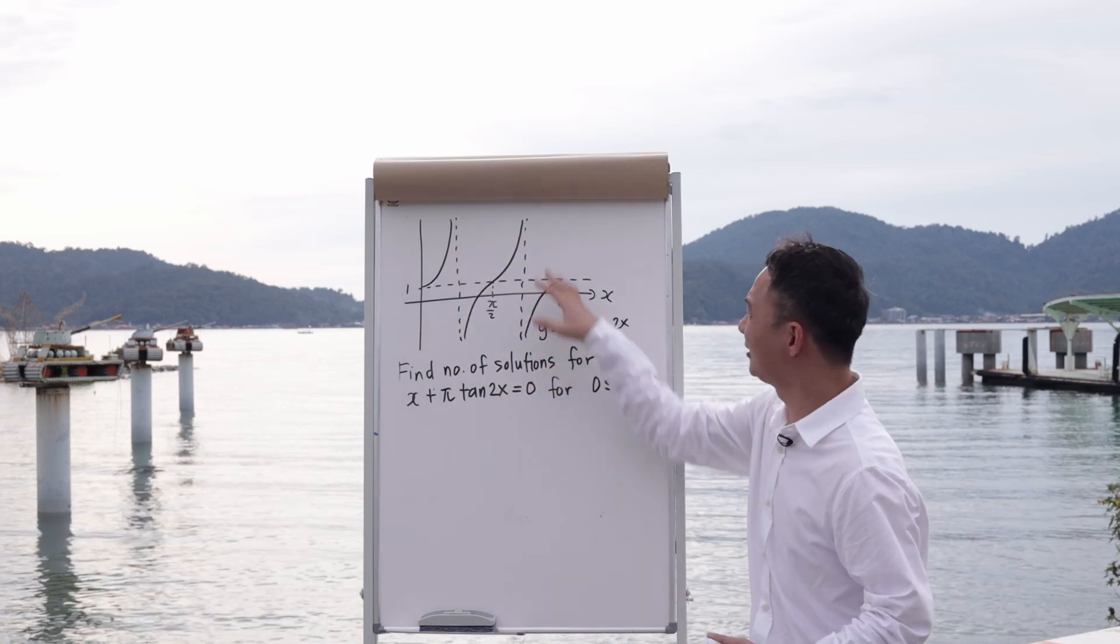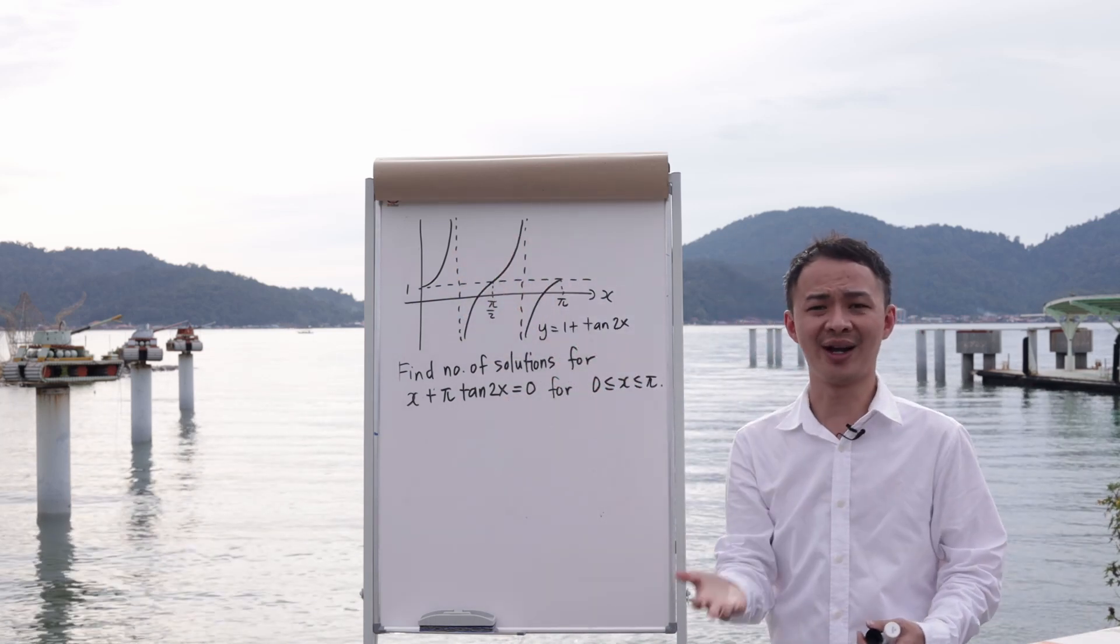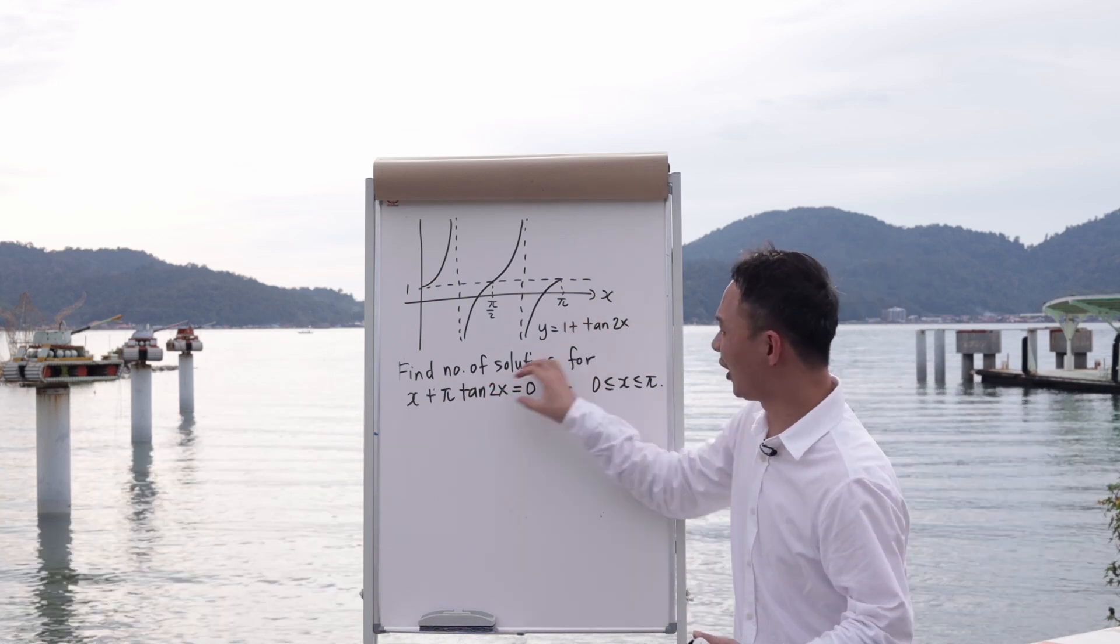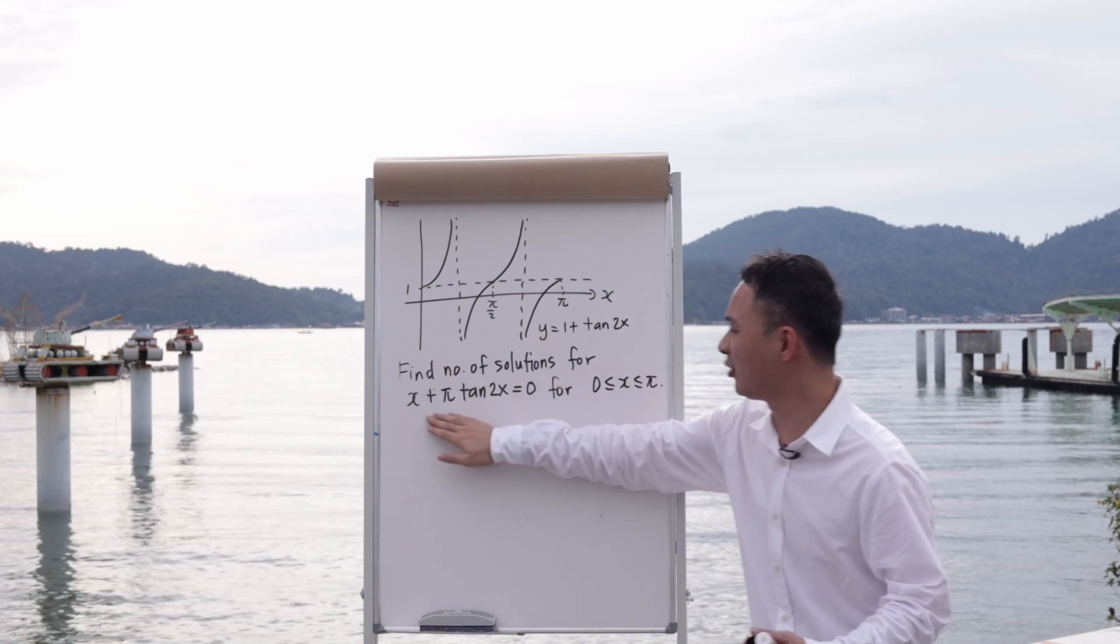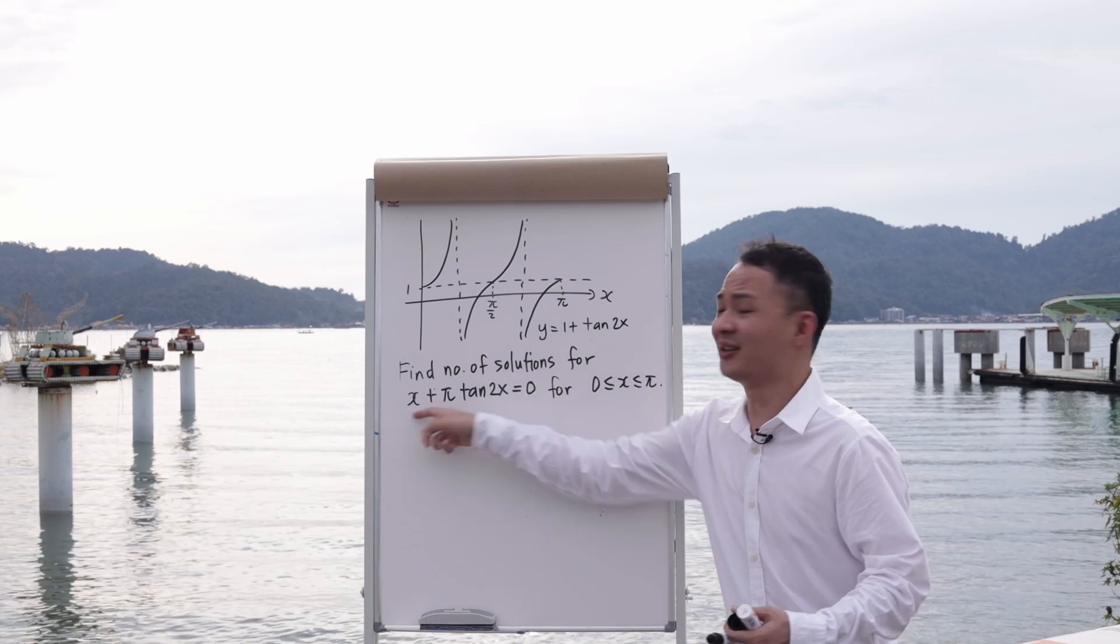So you can see over here, this graph itself is y equals to 1 plus tangent 2x. So therefore, whenever I need to find a number of solutions, I need to have y and x. If you see carefully, this equation itself, you don't have y in the whole equation here.